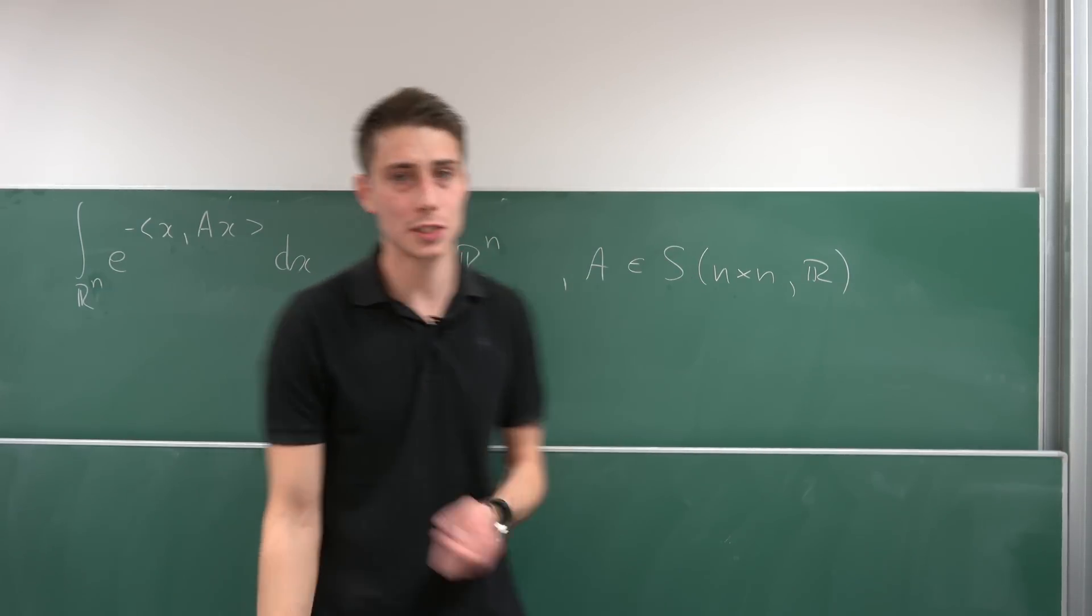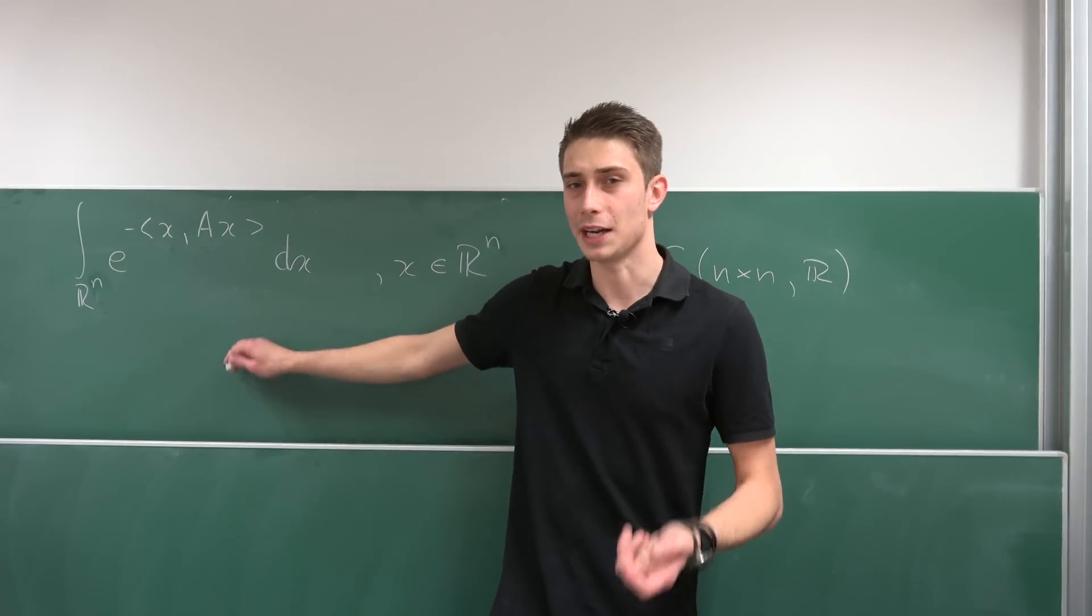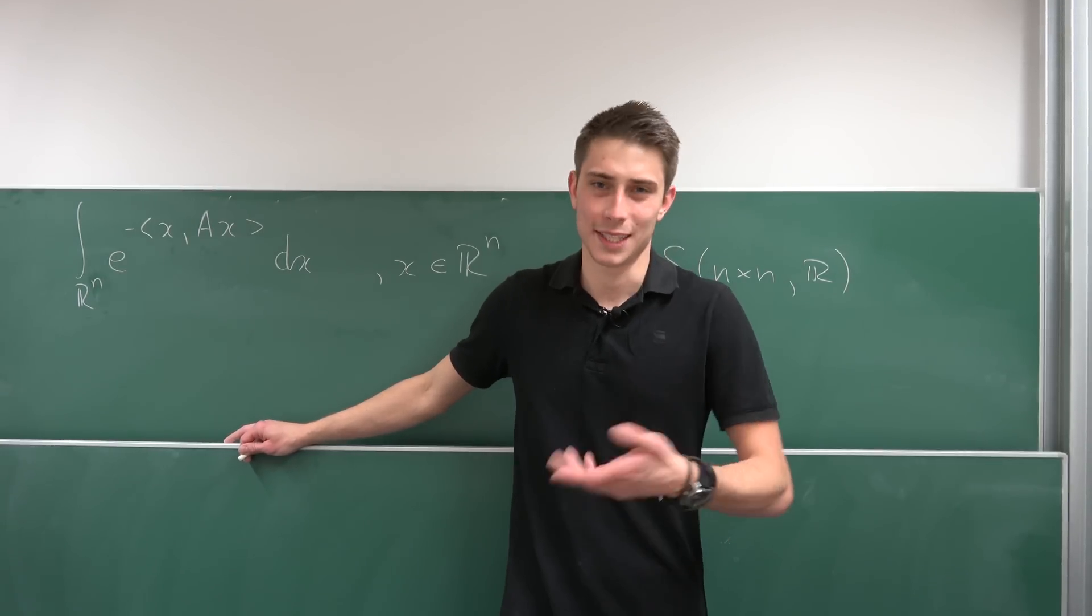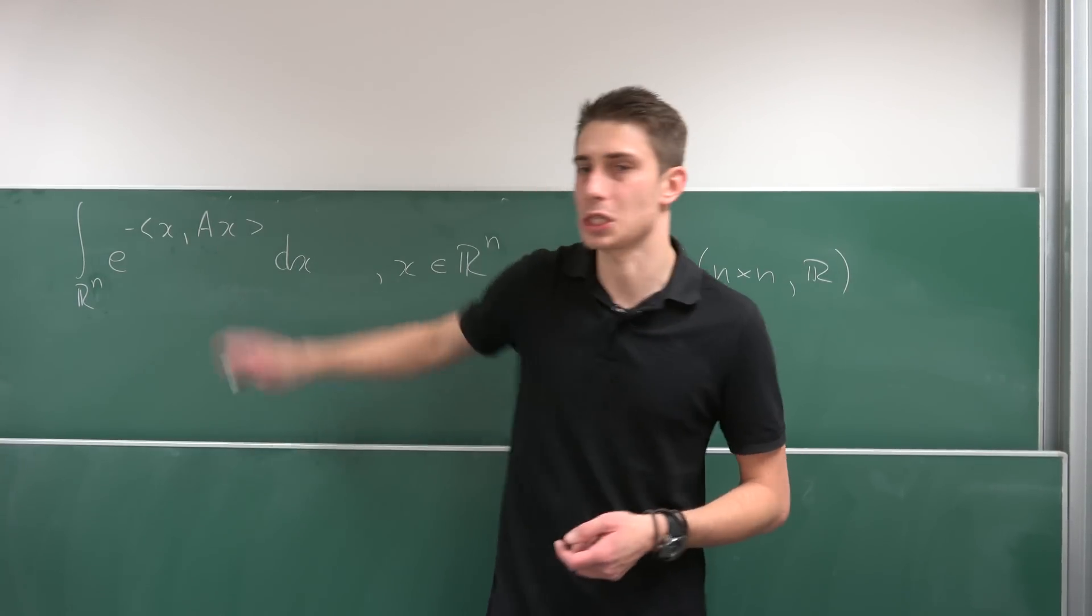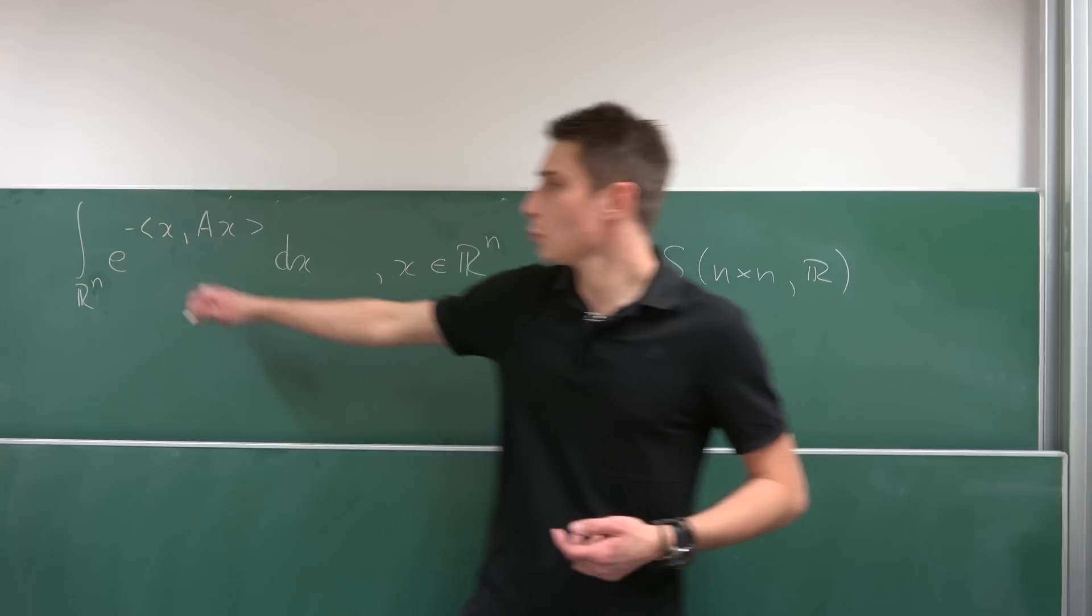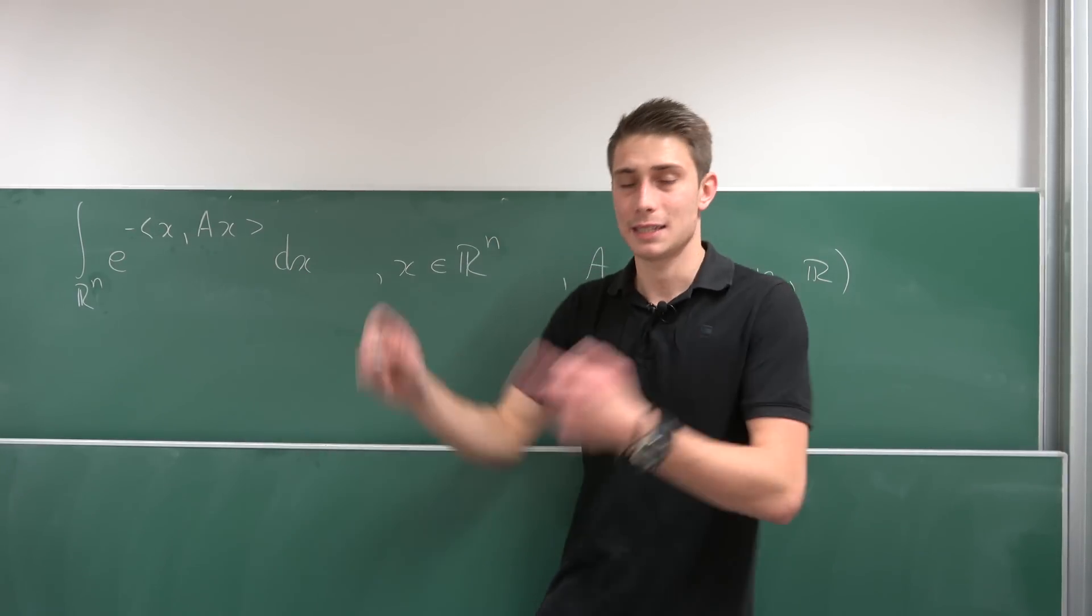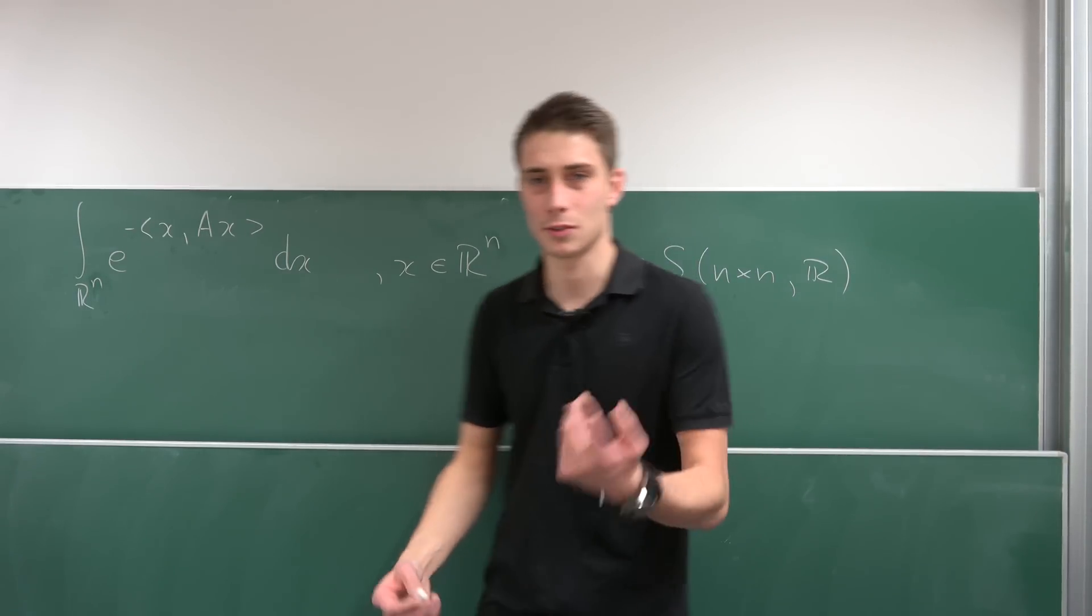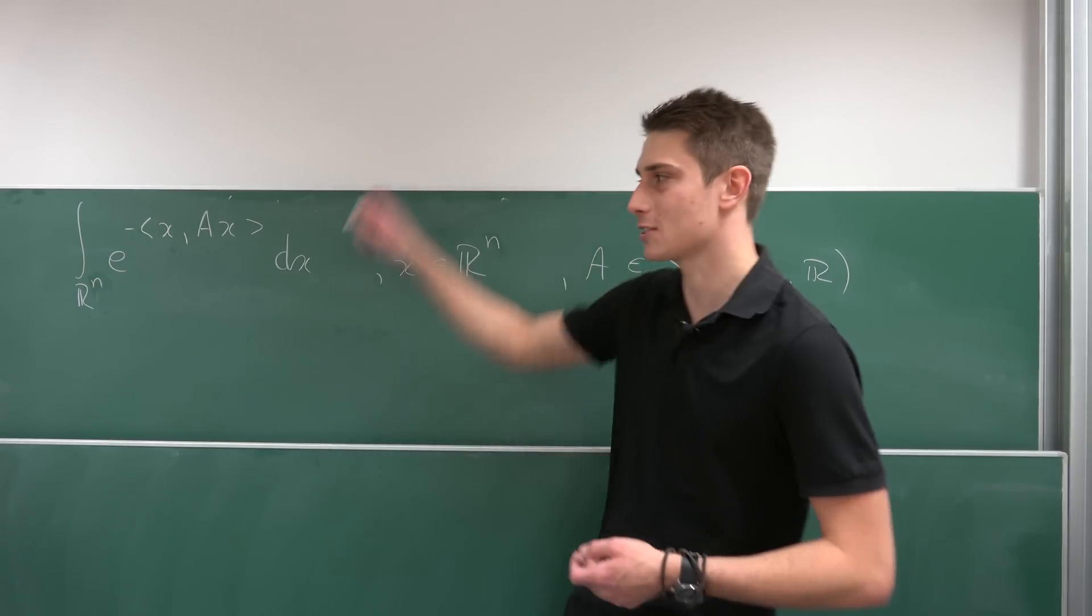Also, we want this a to be positive definite, meaning all the eigenvalues in there are real and strictly positive. This is just something we need in order for this to converge right here. If you don't want this negative sign right here, then you have to take a matrix which is negative definite. Something like this should definitely exist.